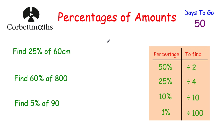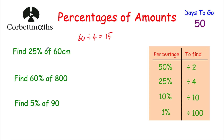Here are some questions for you to try — these are non-calculator questions. Can you pause the video and try to find 25% of 60 centimetres, 60% of 800, and 5% of 90? For 25% of 60 centimetres: to find 25%, divide by 4, so half of 60 is 30, and half again is 15. So 25% of 60 centimetres is 15 centimetres.